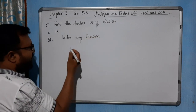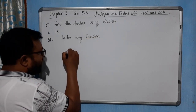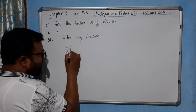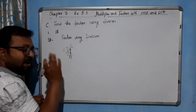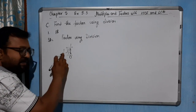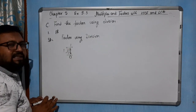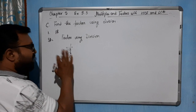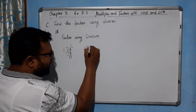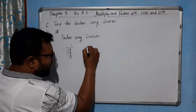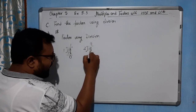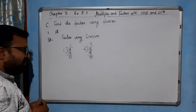First, we will try dividing 18 by 1. 1 divides 18 with remainder 0. As long as we are getting 0, that divisor is a factor of the number. Let's try by 2 — 18 divided by 2 is 9, remainder 0. So 2 is also a factor.